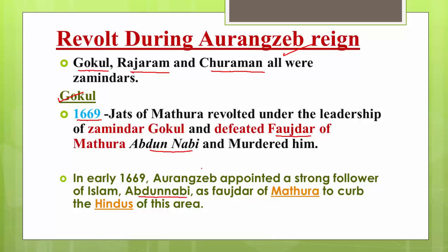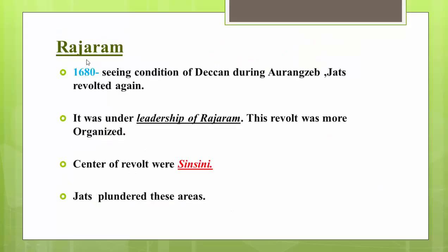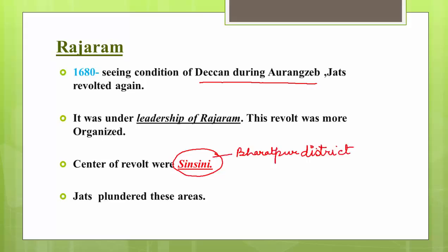Although this revolt was crushed, the Jat community was not crushed. After Gokul came Raja Ram, and revolt also took place during his time in 1680. It was during the time when Aurangzeb was busy in his Deccan expedition. The Jats revolted, seeing the overall condition of the empire, and it was a more organized revolt than the earlier one of 1669. The center of this revolt was Sinsini, a village in the Bharatpur district.